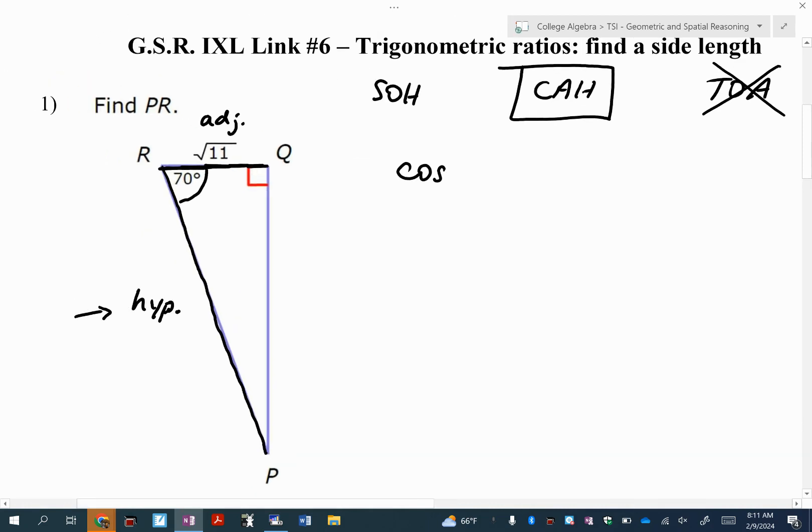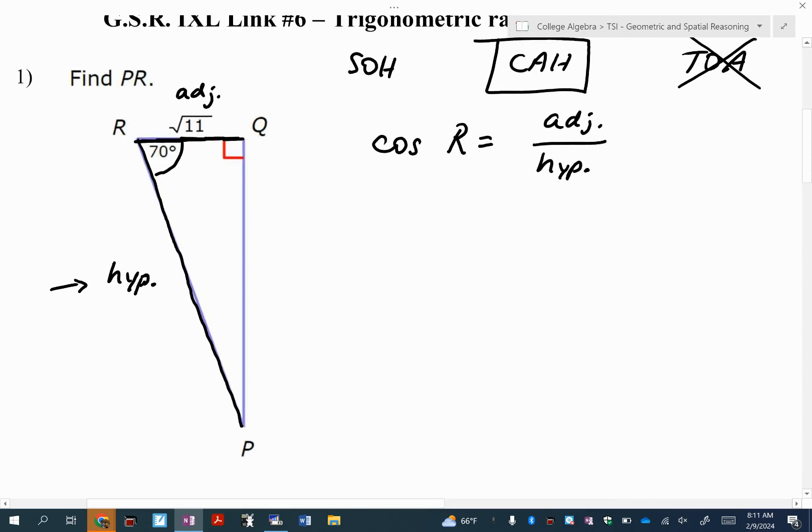So the cosine of angle R is equal to the adjacent side over the hypotenuse. So I'm going to write the cosine of 70 degrees equals the square root of 11 over the hypotenuse. And again I'm solving for the hypotenuse. Now if you were in Ms. Burns' class, I'm going to do the way she taught it. What she taught was to put cosine of 70 degrees over one.